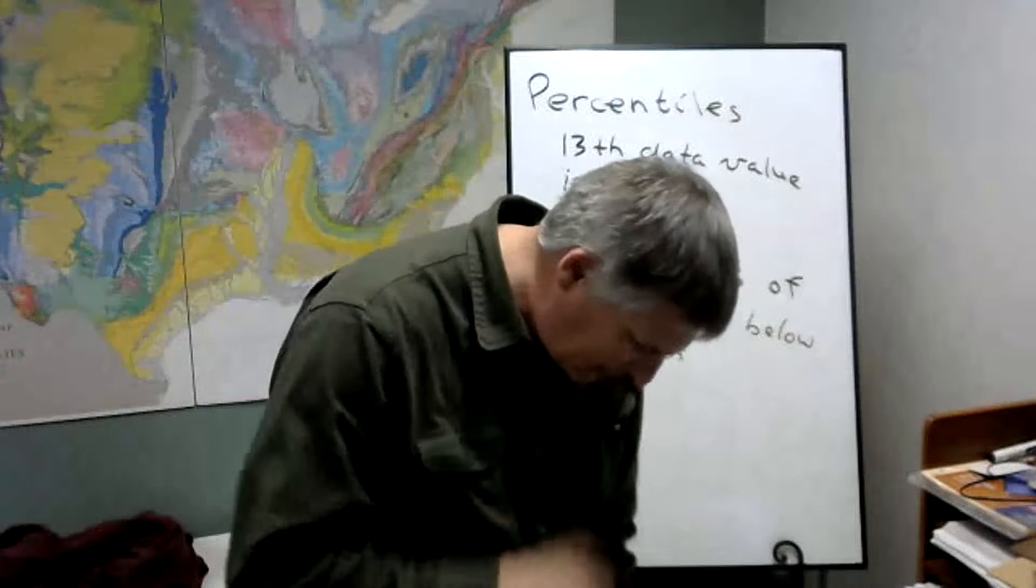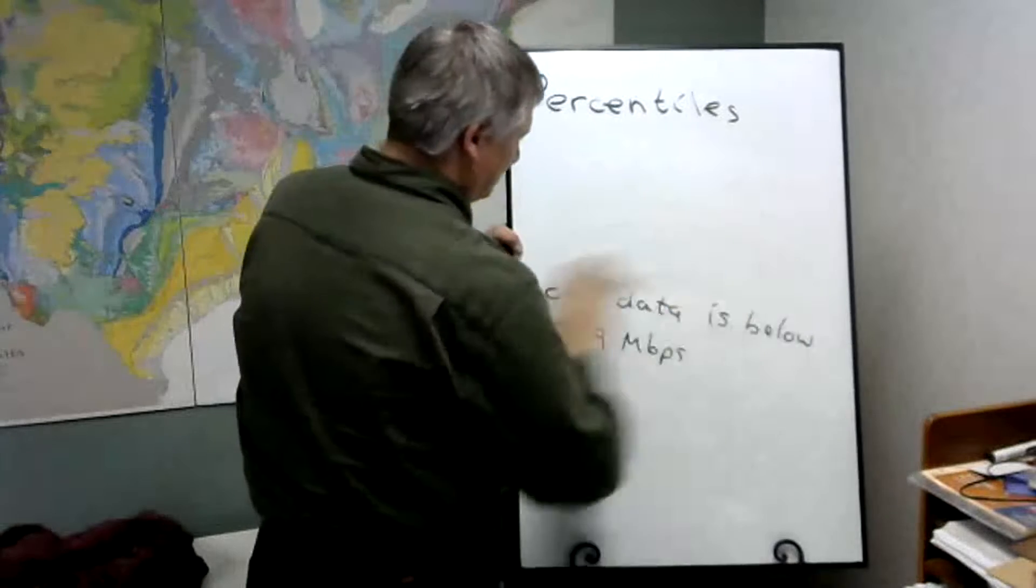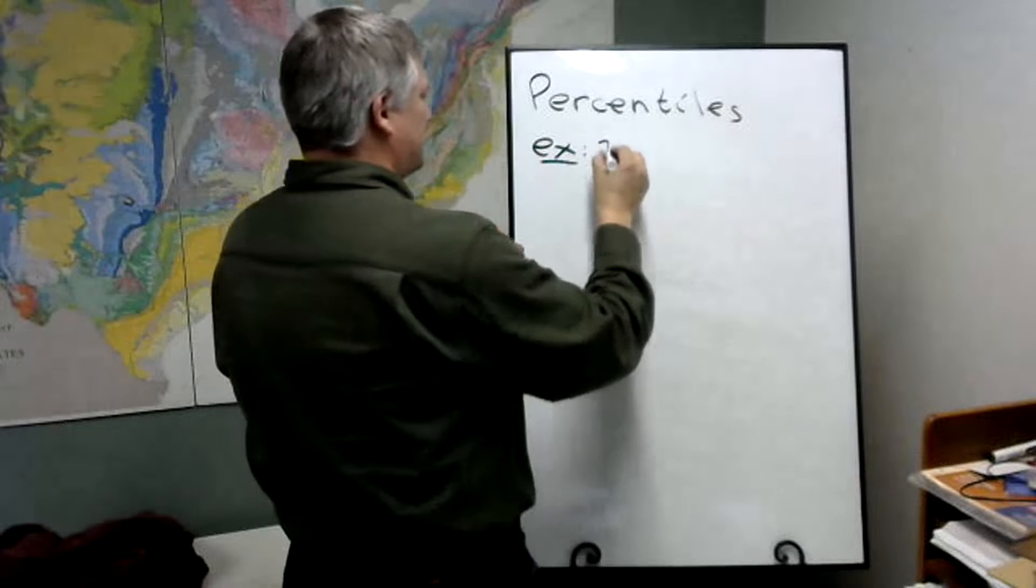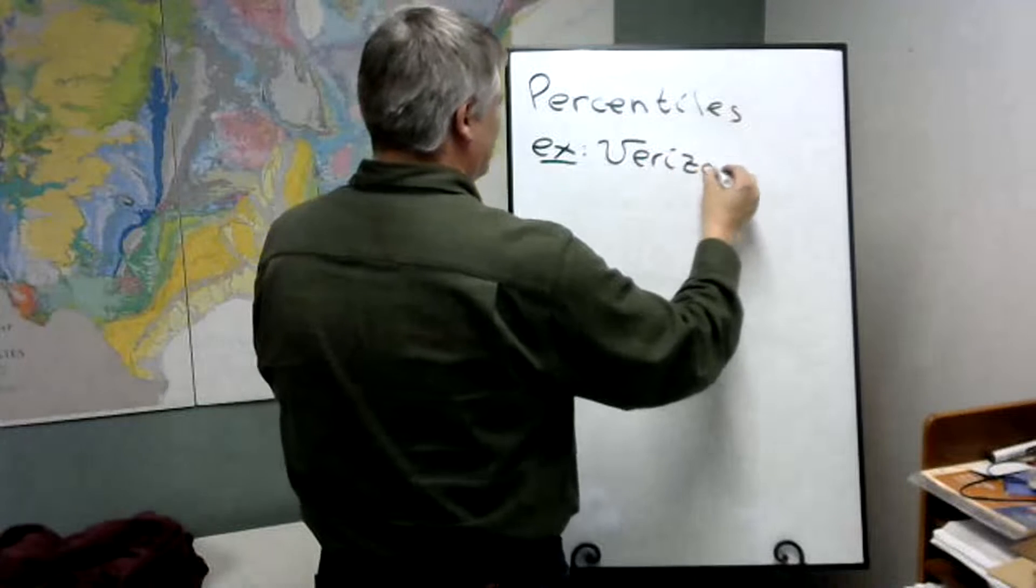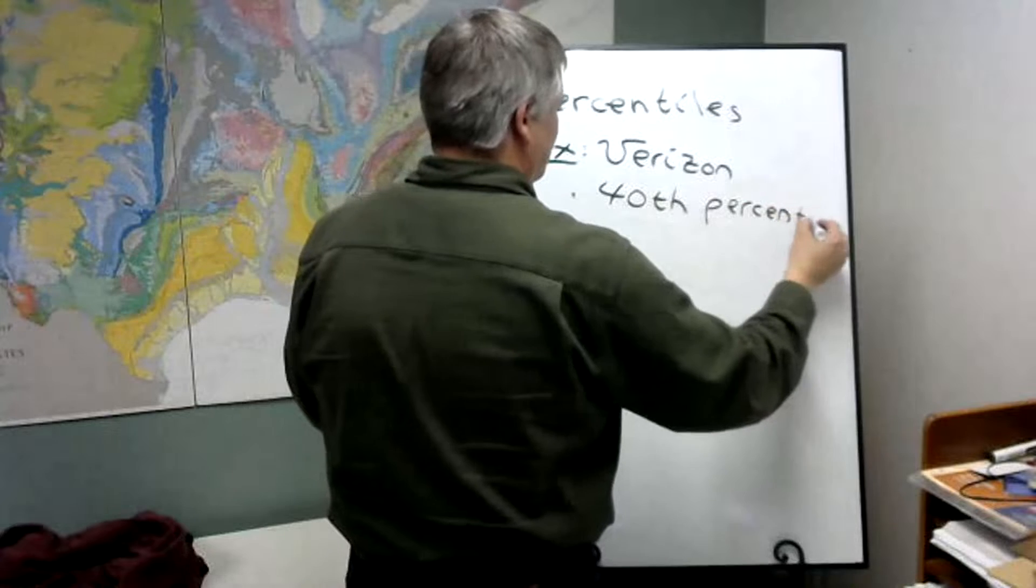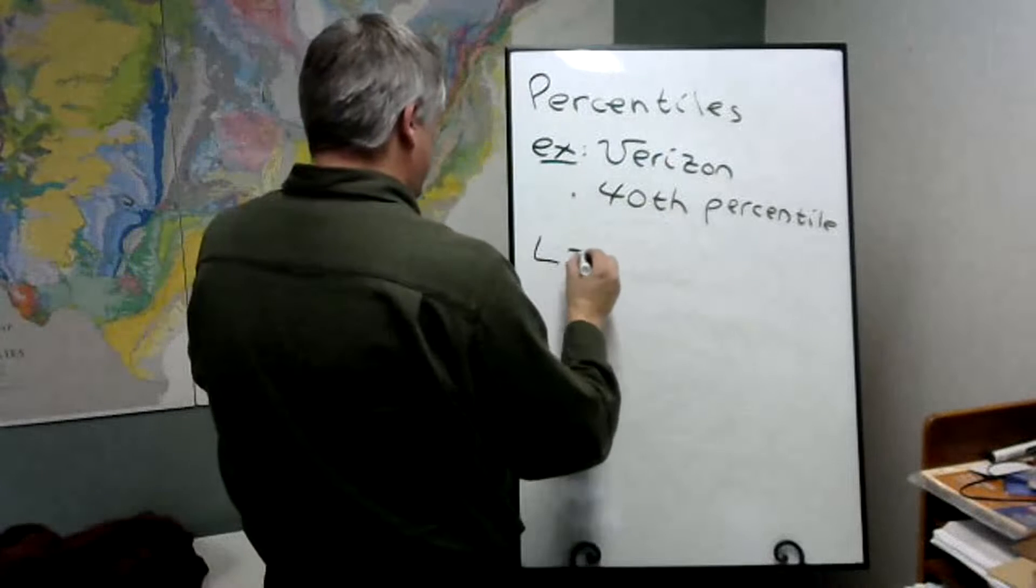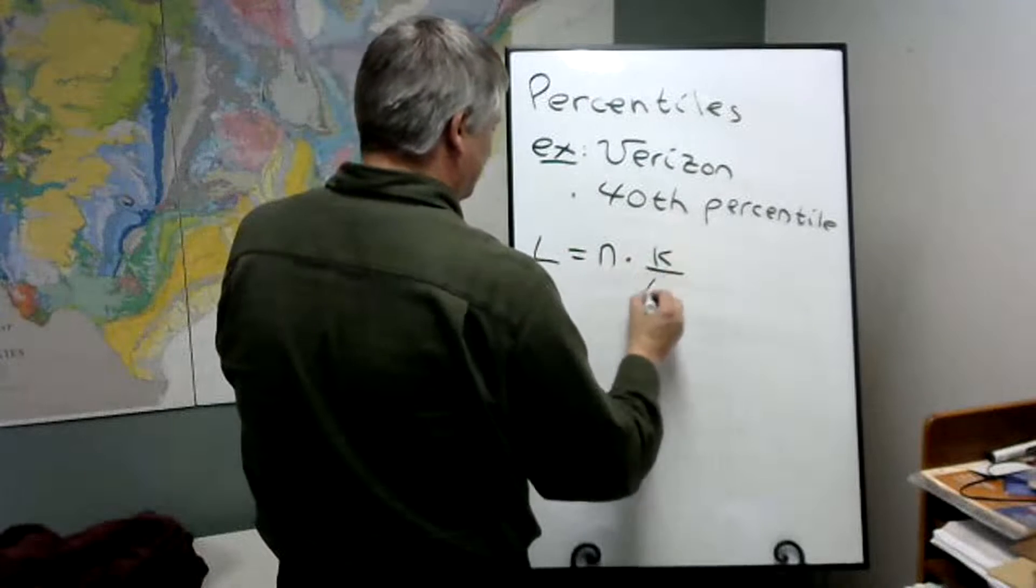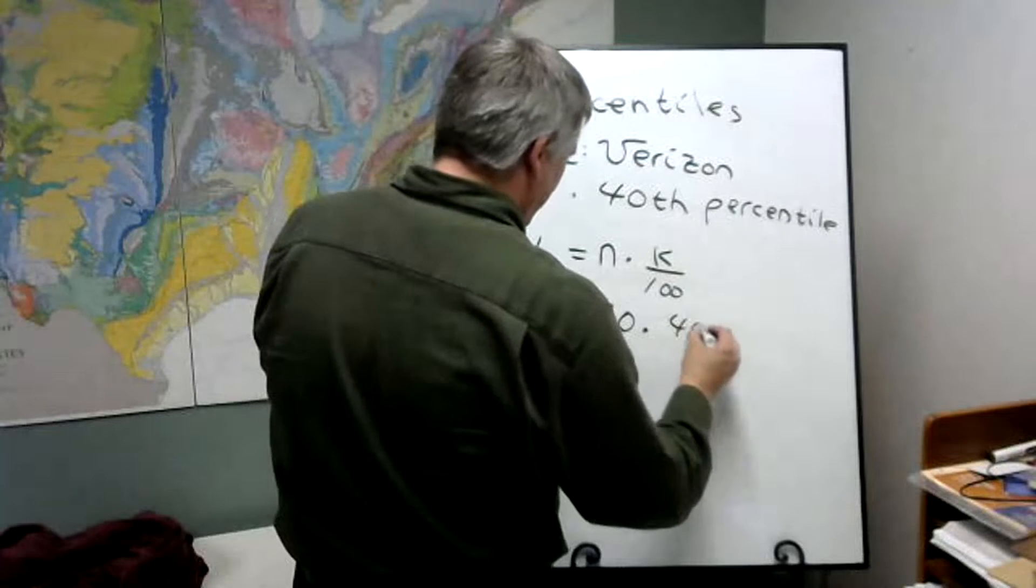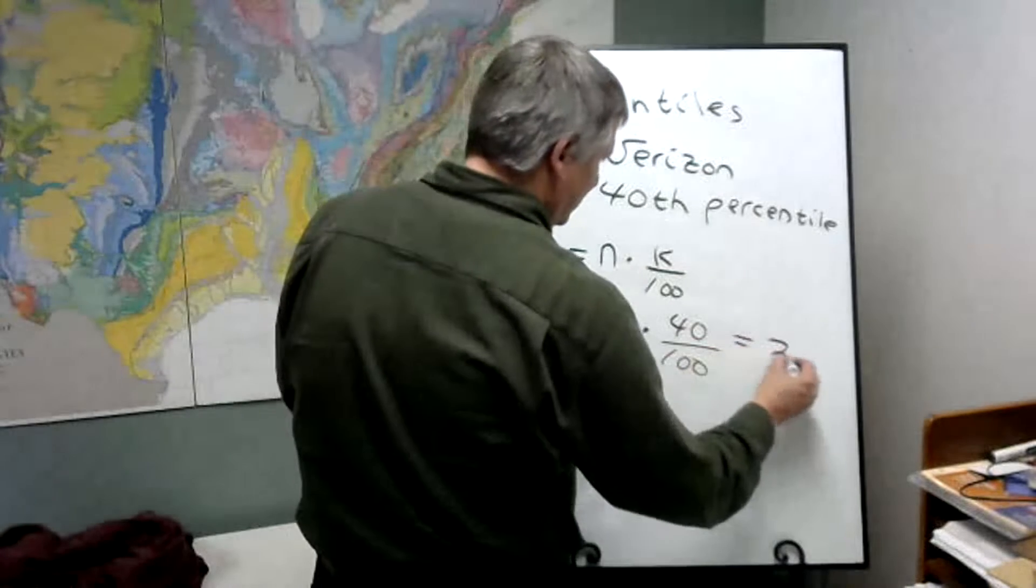All right, let me do another one. Now let's say we want to find this out. Again, this is the Verizon data. I want to find the 40th percentile. So what we do here, we're going to use our formula. L equals n times k over 100. N is 50. K is 40, that's our percentile, and if we do the computation we're going to get 20.